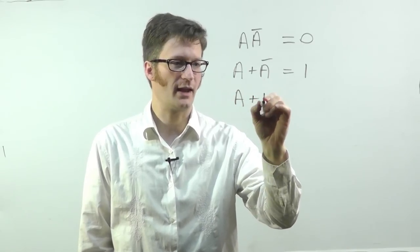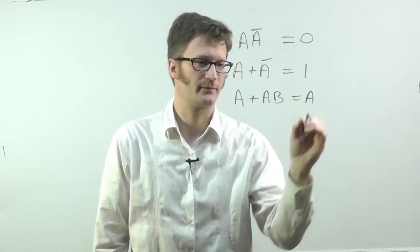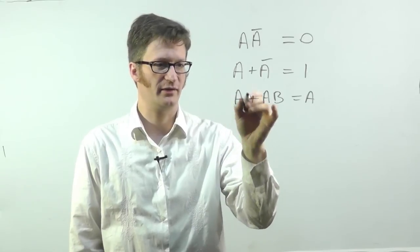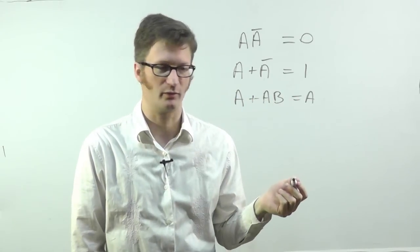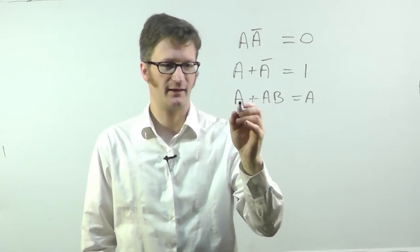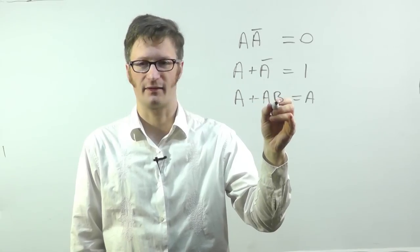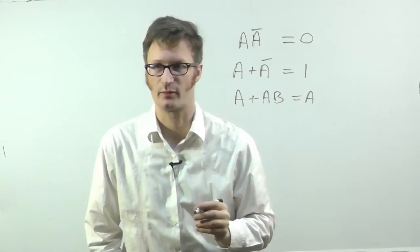If I have A or A B, this equals A. Because let's say if A is one, well, this term equals one. And one or anything equals one. And let's say this equals zero. If I have zero and something, it equals zero. So whatever A is, is what this is, is what this works out to.